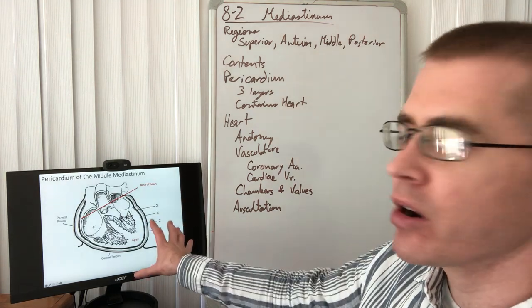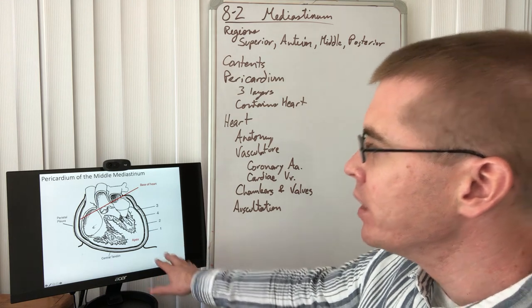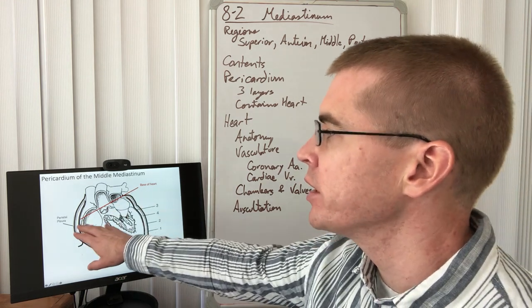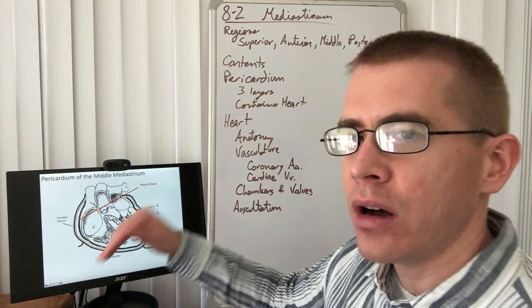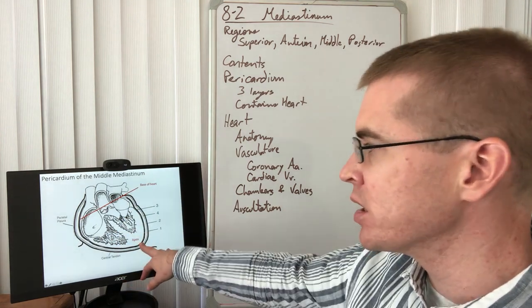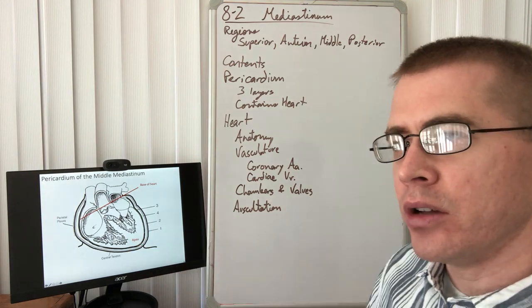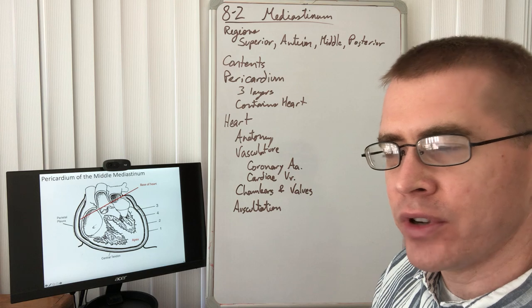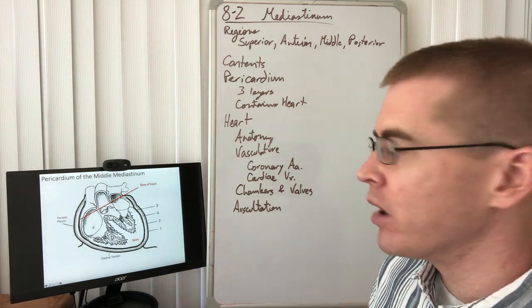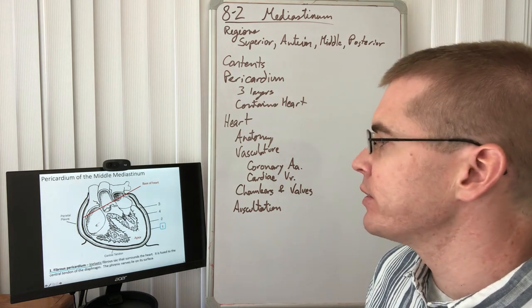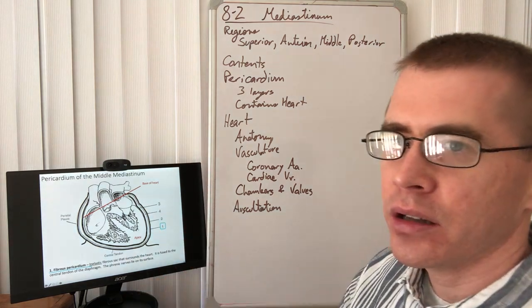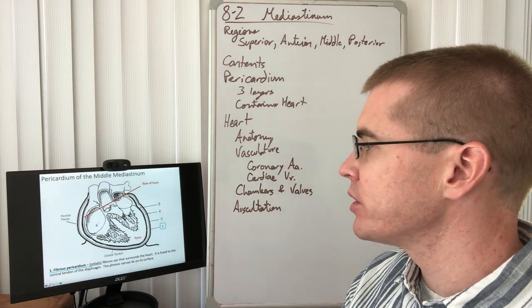Now let's talk about the pericardium itself in the middle mediastinum. In the typical anatomical view of the heart, the base of the heart is where the great vessels come off the superior portion. The apex of the heart is the bottom portion — the tip — pointing off to the individual's left, at the bottom of the ventricles.